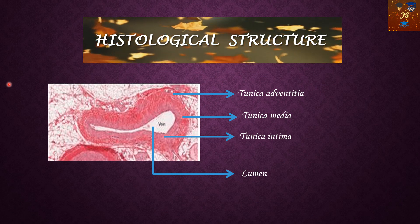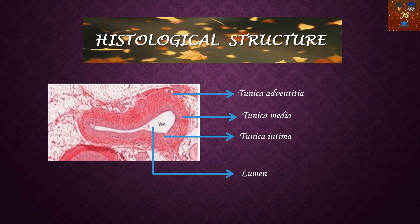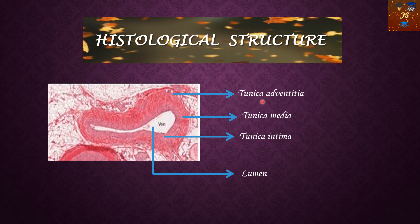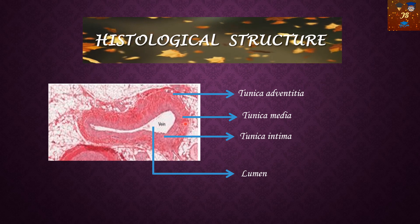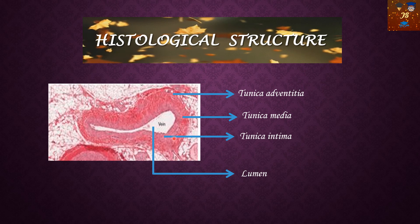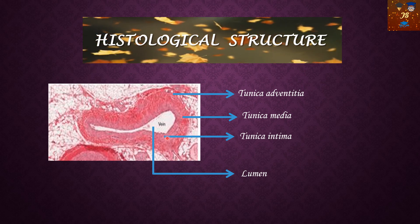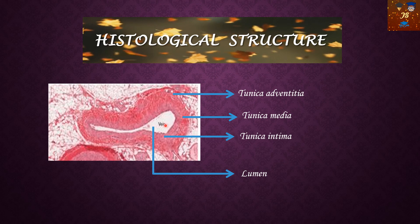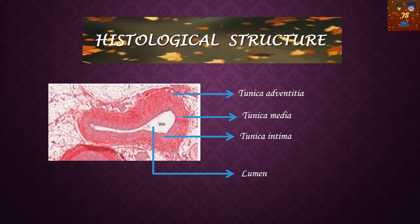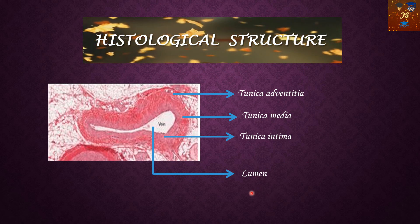This is the histological structure of the vein. Three layers are shown here: the outermost layer is called the tunica adventitia or tunica externa, the middle layer is the tunica media, and the innermost layer is the tunica intima, present close to the lumen. You can see the lumen is wavy in appearance — this is referred to as the wavy lumen.